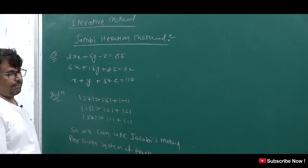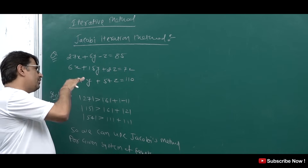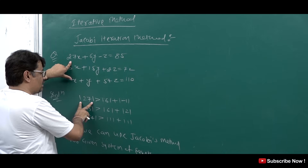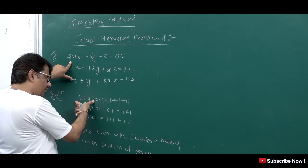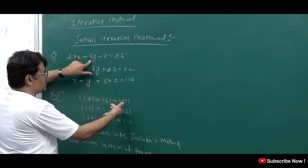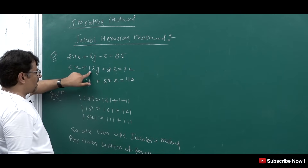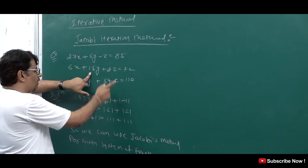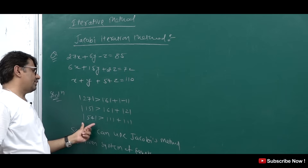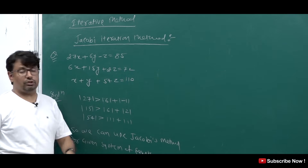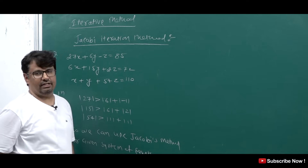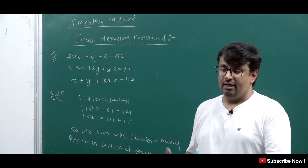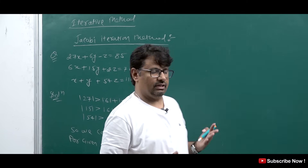You have to check first that the coefficient of x in the first equation — the modulus of the coefficient of x must be greater than the sum of the moduli of the coefficients of y and z. Similarly, the modulus of the coefficient of y must be greater than the sum of the others. If this diagonal dominance condition is satisfied, we apply the Jacobi method. If not, the method can still work but will take more iterations and may take longer to converge.